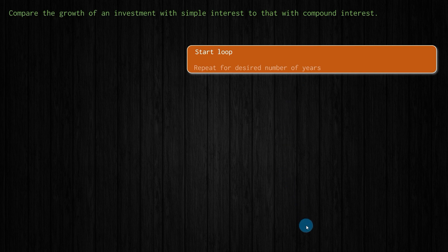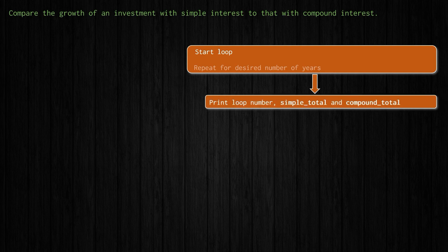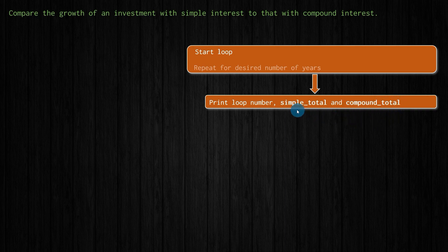In that loop, I'm going to print some things: the loop number, which represents the year we're talking about — zero for year zero, one for year one, and so on. I'm also going to print the total for our simple interest situation and the total for our compound interest situation, using variables simple_total and compound_total.